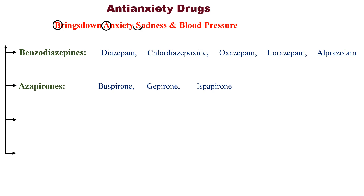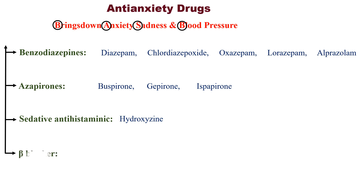Then, S stands for sedative antihistaminic. Example is hydroxyzine. And B stands for beta-adrenergic blocker. Example is propranolol.